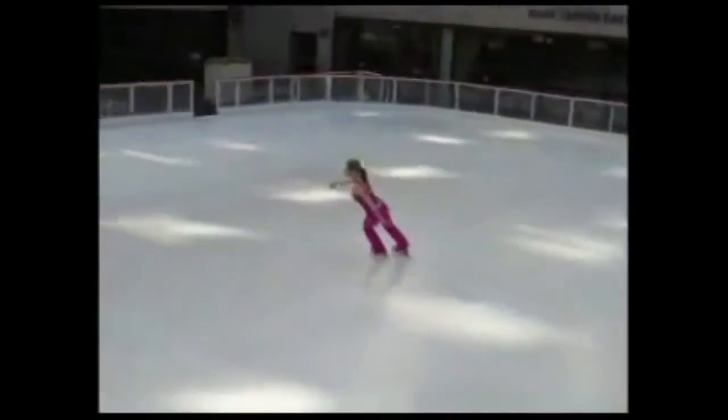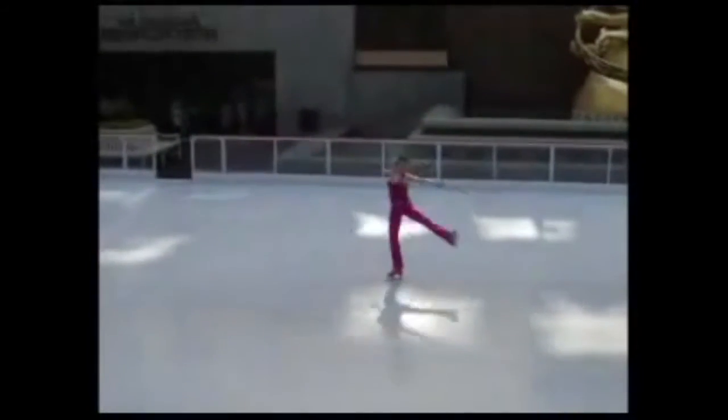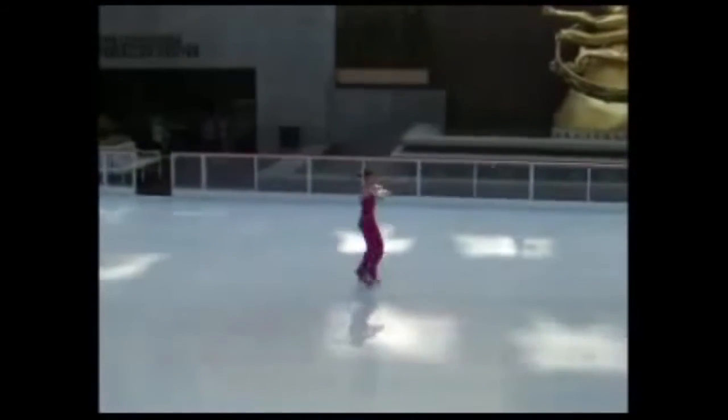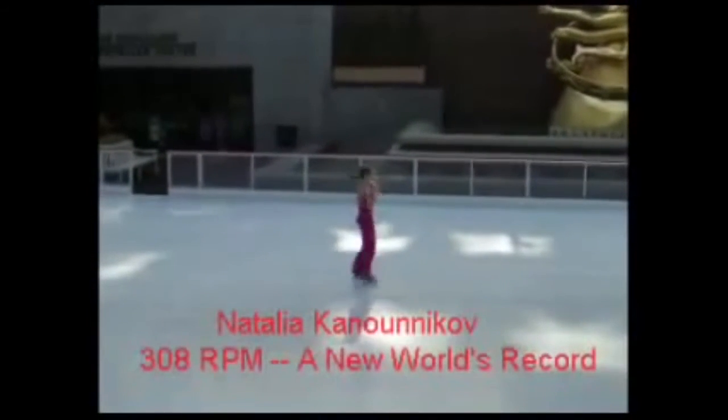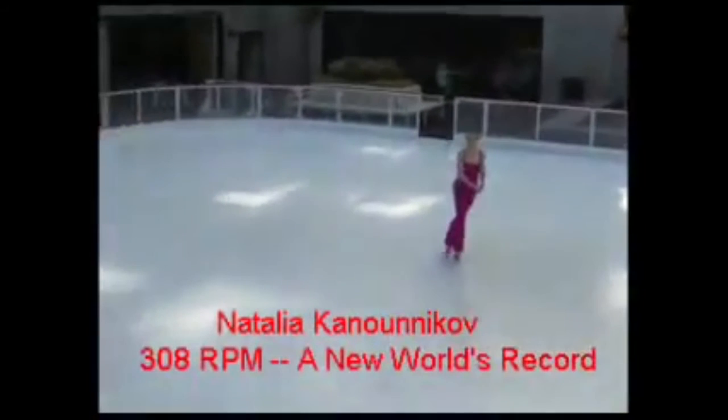Watch as this ice skater prepares for her spin. She starts with her arms and legs far away from her body and then she pulls them in slowly and tremendously increases her angular velocity. So much so that she set a new world record, according to YouTube anyway.